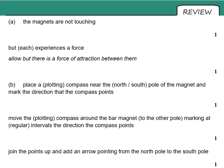And here are your answers. So in part A, magnets are not touching, but each experiences a force. In part B, to plot the field, we place a compass near the north or south pole of a magnet, and mark the direction it points. Move the compass around the bar magnet, marking at regular intervals the direction on which the compass points, join the points up, and add arrow pointing from the north pole to the south pole.